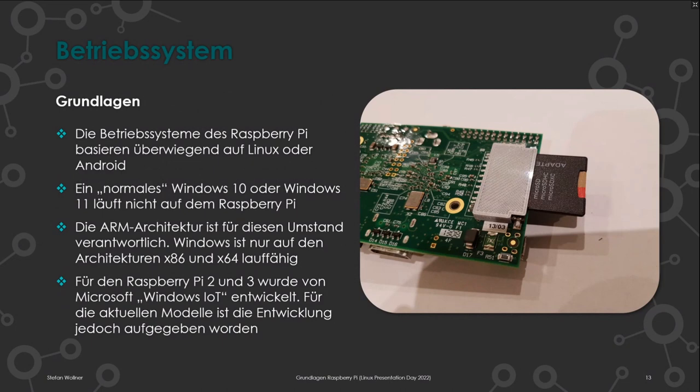Es gibt findige Hacker, die Windows für ARM auf dem Raspberry Pi lauffähig machen wollen. Es gibt sogar ein Installationsskript auf GitHub – erwartet aber nicht, dass danach alles funktioniert: Er bootet Windows, und das ist toll, aber wirklich nutzbar ist es nicht. Microsoft hatte auch mal für den Raspberry Pi 2 und 3 ein Betriebssystem entwickelt: Windows IoT. Die Entwicklung wurde eingestellt und für aktuelle Modelle ist es gar nicht verfügbar.